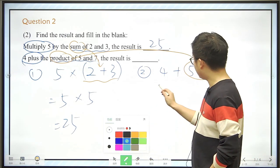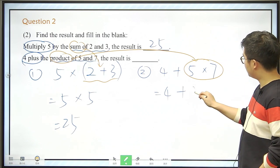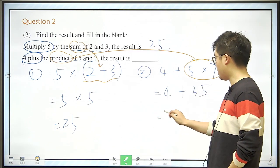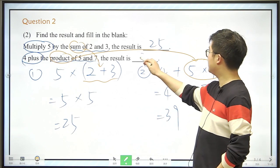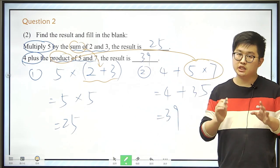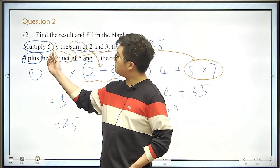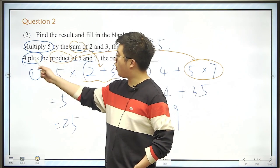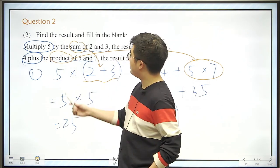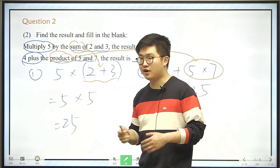So let's also just continue, this is 4 plus 35. So the answer would be 39. Now so in these questions, we are seeing two layers. The first layer is multiply 5 or 4 plus, and then the next layer is the sum of 2 and 3, or the product of 5 and 7.